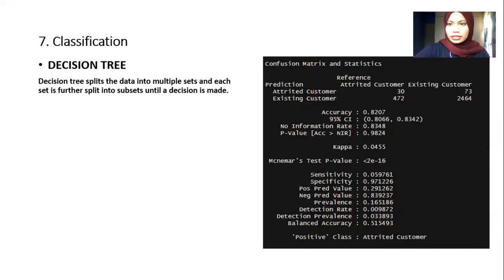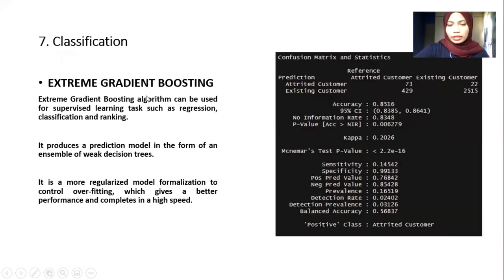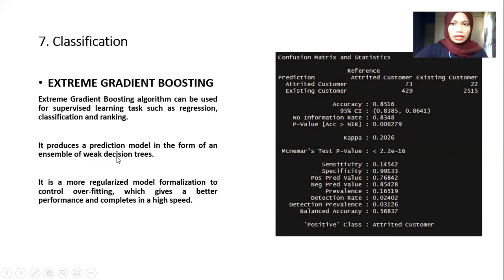For the decision tree, it splits the data until a decision is made. Here is the result for the confusion matrix, showing the value of accuracy and kappa value. The next algorithm is extreme gradient boosting, which is a prediction model in the form of an ensemble of weak algorithms such as decision trees. We chose these two algorithms to compare their performance and accuracy. We can see that the extreme gradient boosting's accuracy and kappa value are higher than the decision tree.